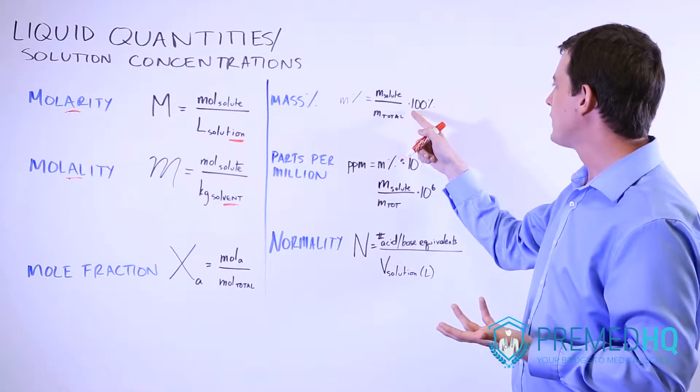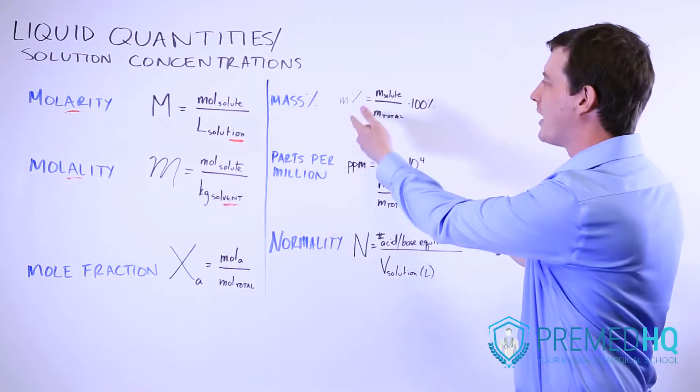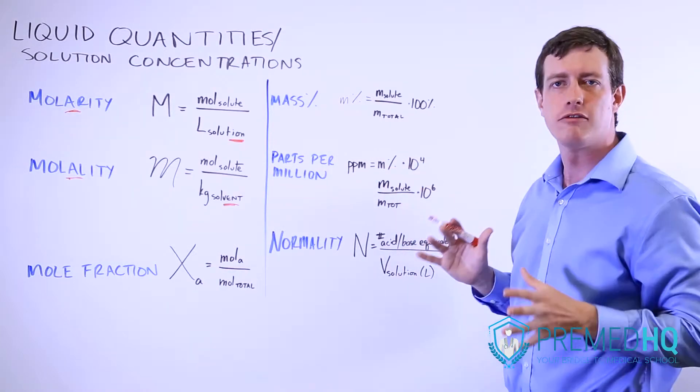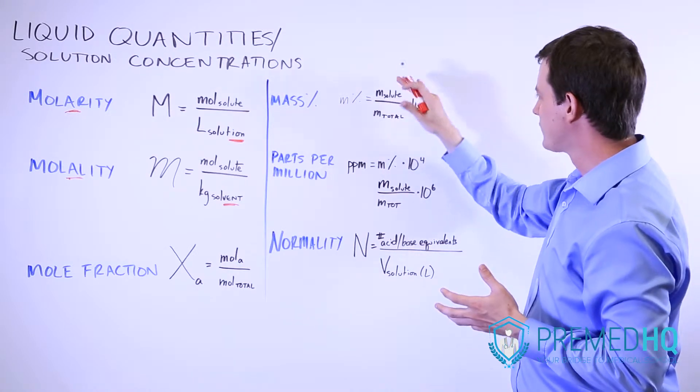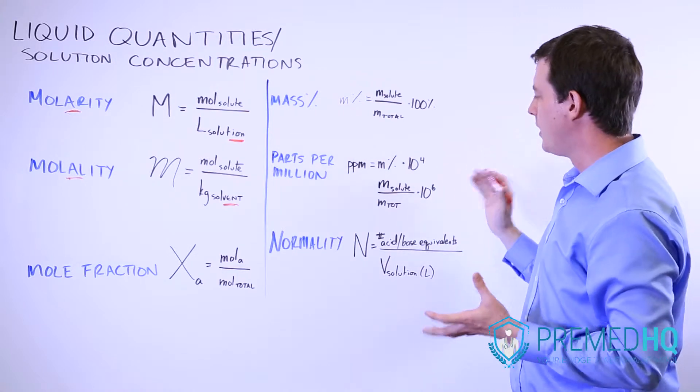The reason that you do that is because you've already multiplied by 100, which is 10 to the second, in order to find mass percentage. So multiplying by an additional 10 to the fourth is a way to get from this mass-to-mass relationship to something that is expressed in millions.